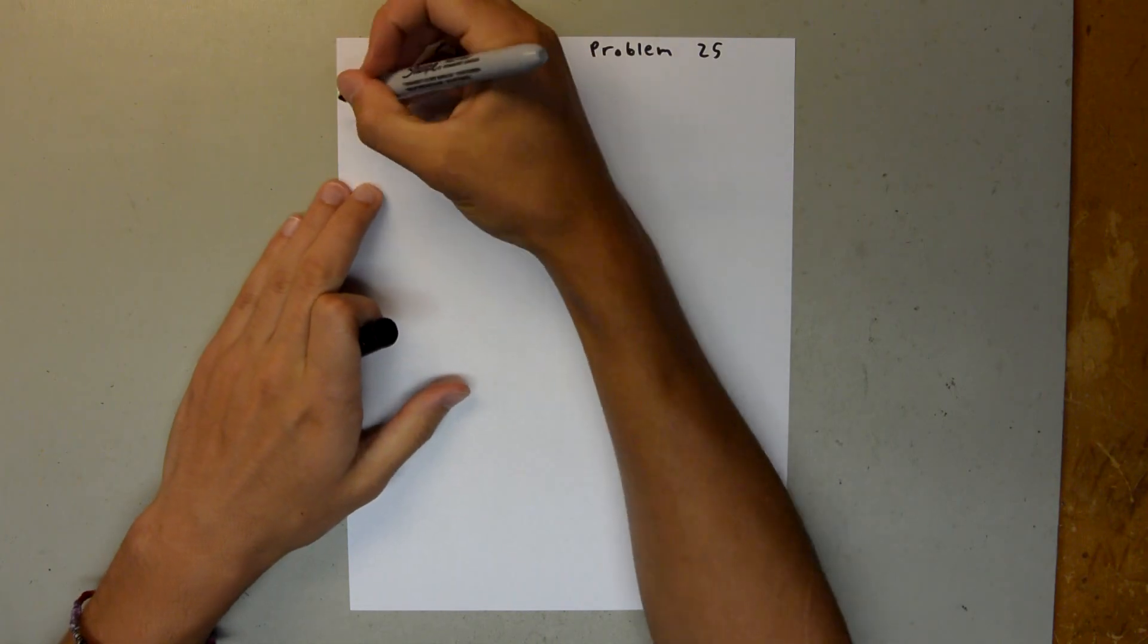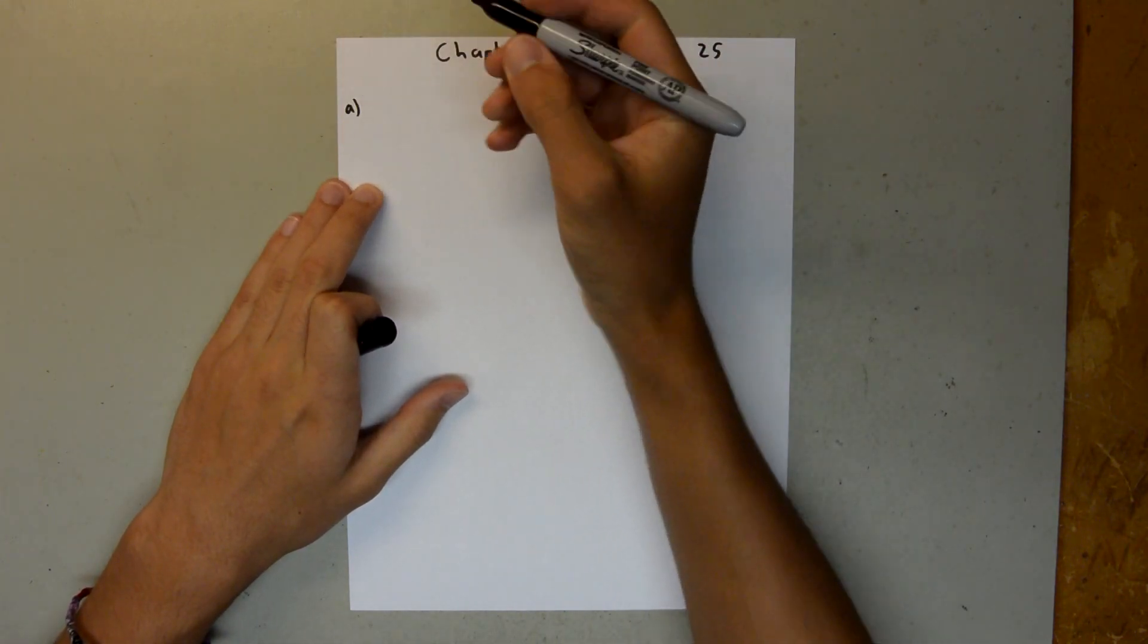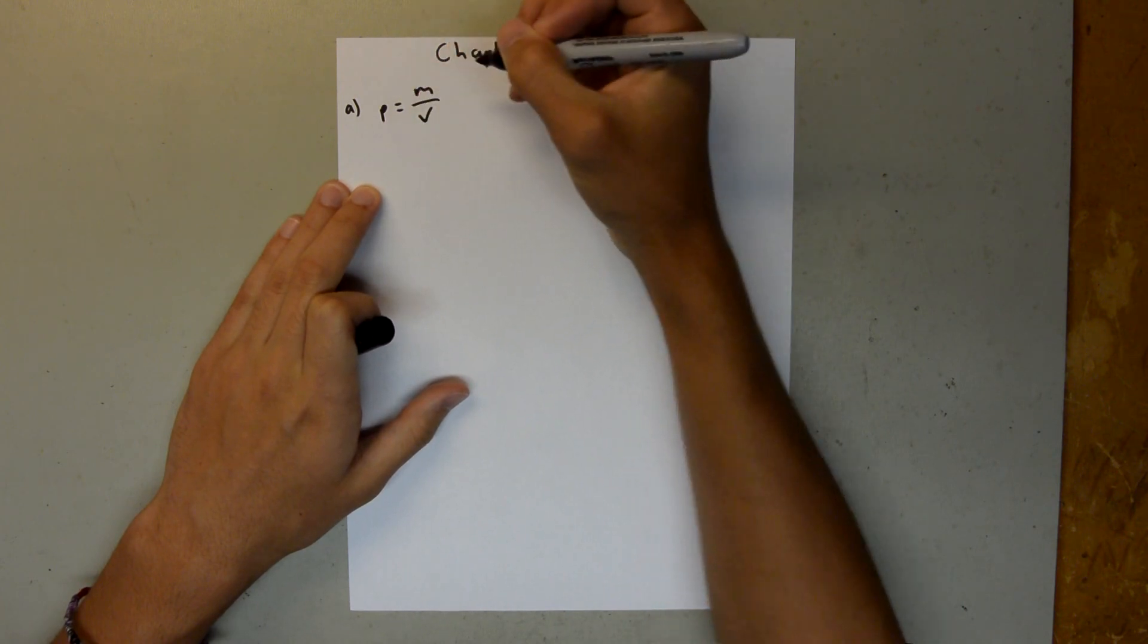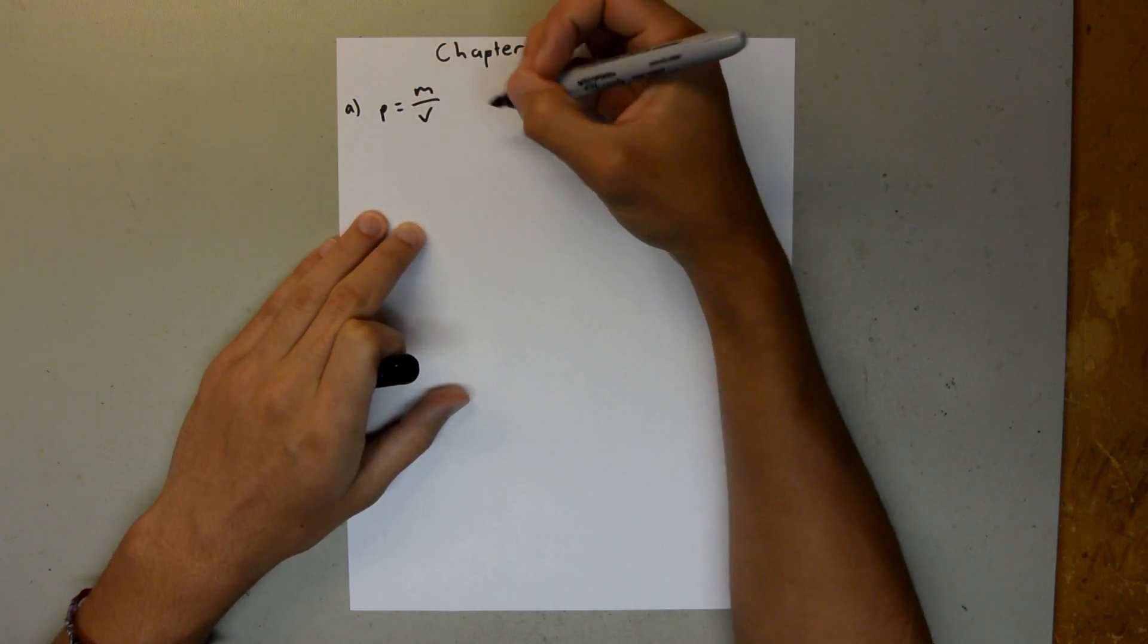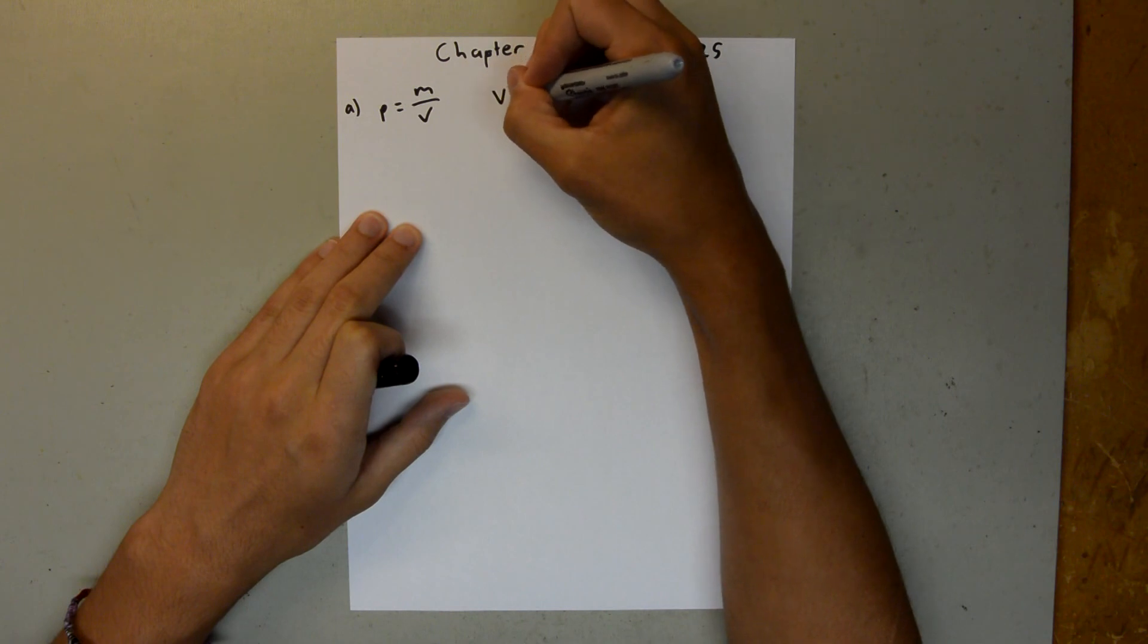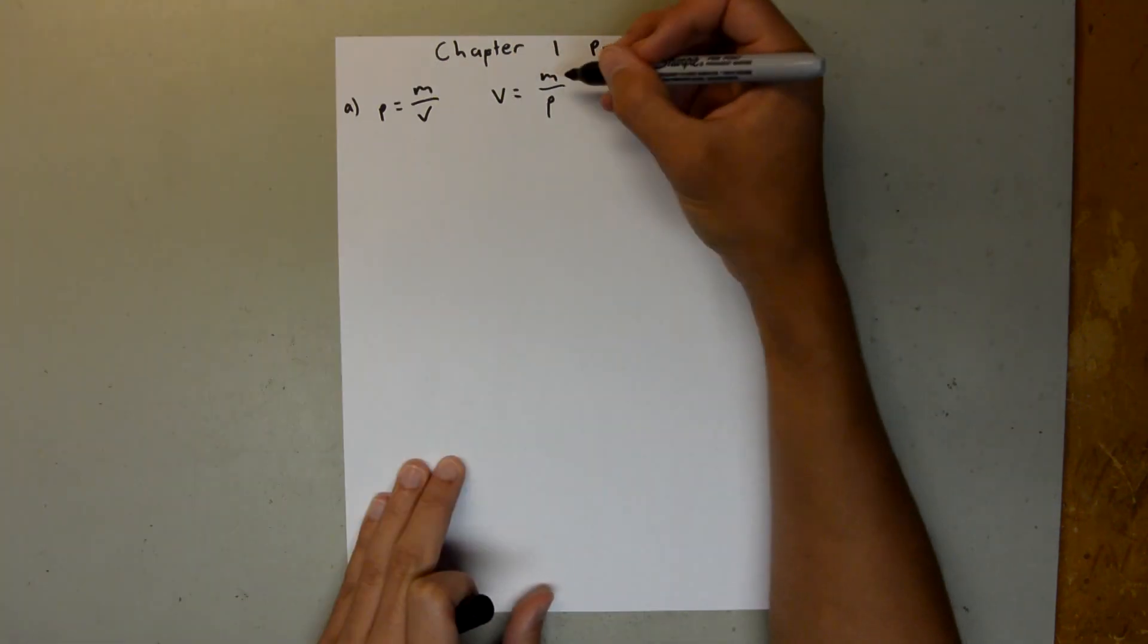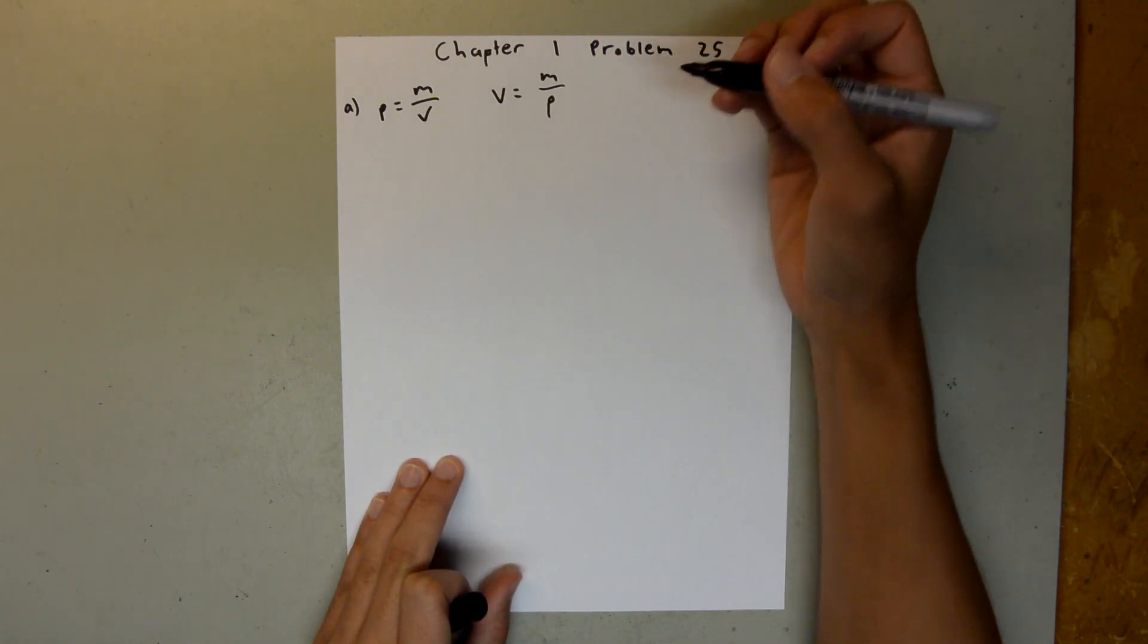So, for Part A, we know that density is equal to mass over volume, so then if we rearrange that for volume, we have volume equals mass over density. And we are given both of these values in the problem, we just need to do some unit conversions.